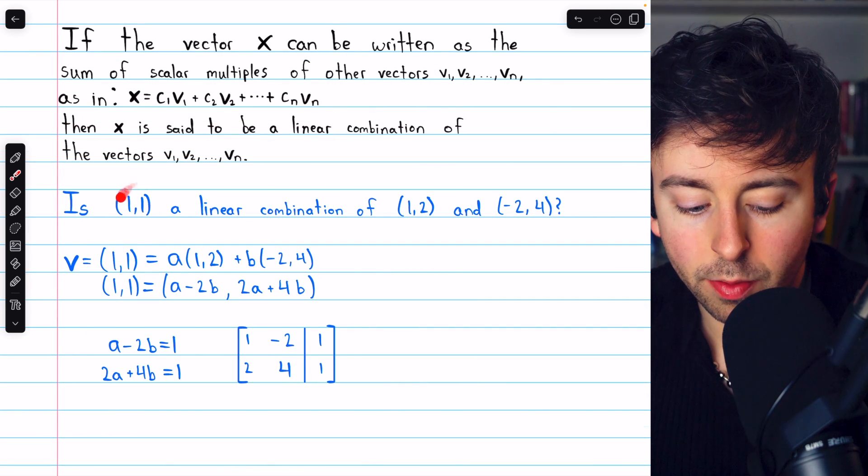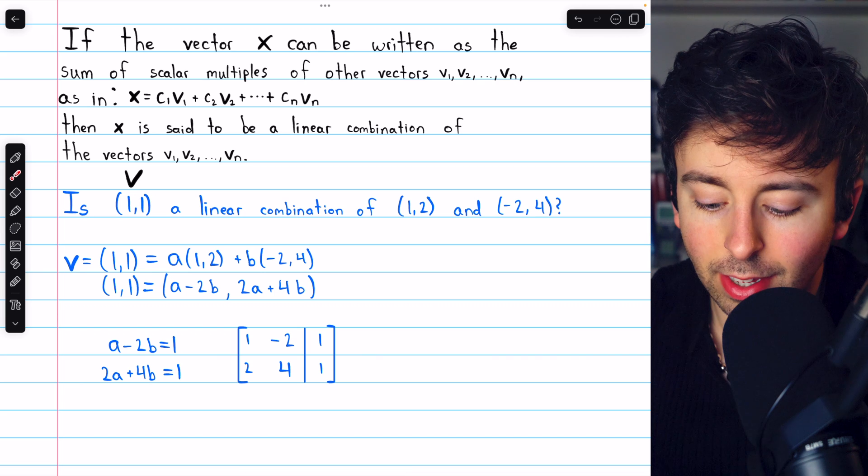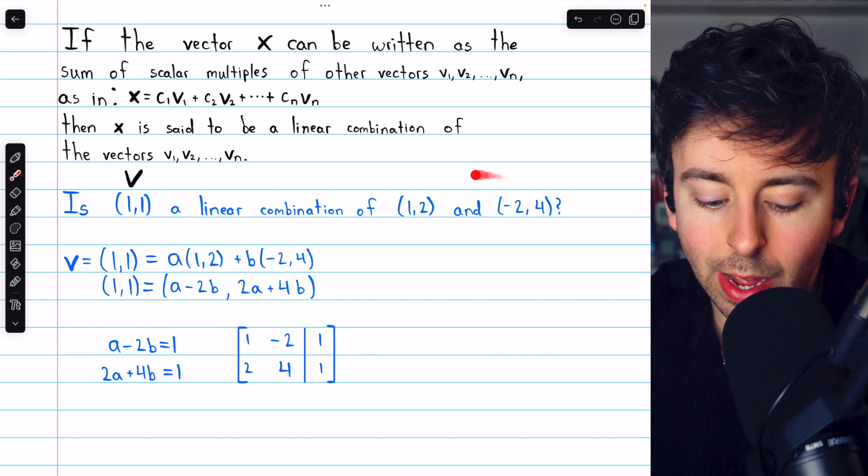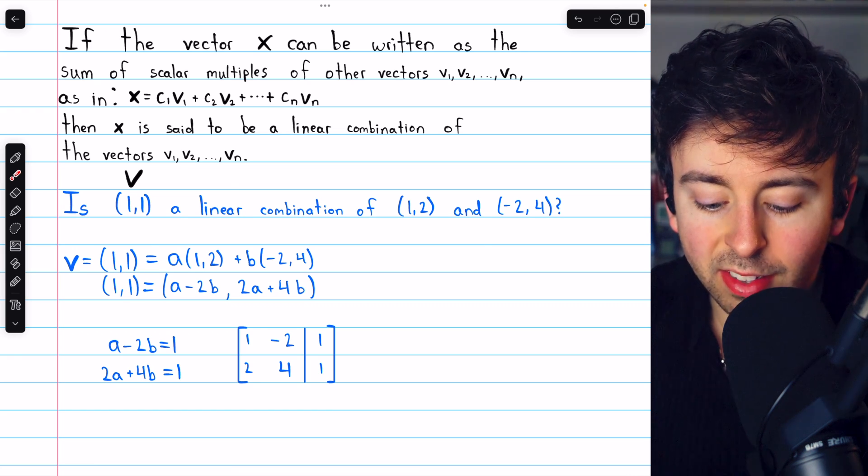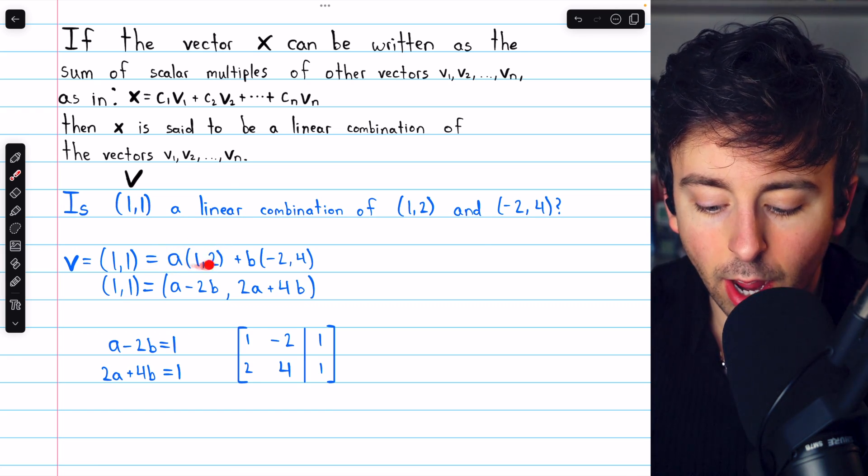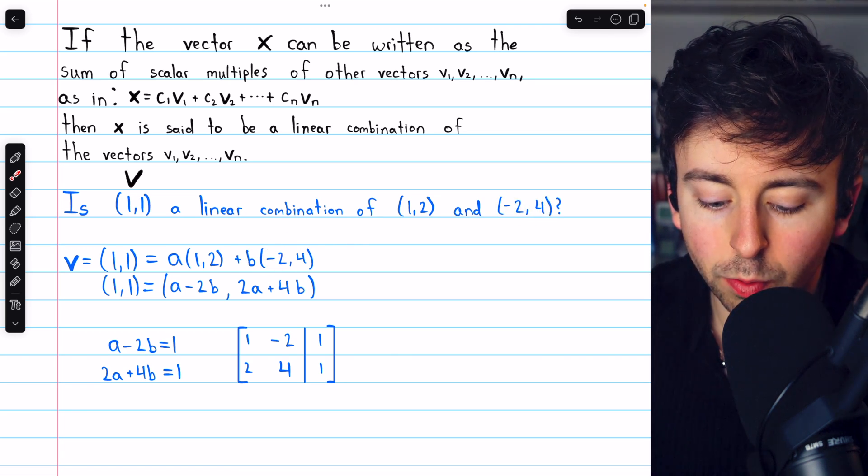Now, let's say we call the vector (1,1) v. If it's the case that this is a linear combination of these two vectors, then certainly we can write that the vector v, which is (1,1), is equal to some coefficient a times (1,2) plus some other coefficient b times (-2,4).